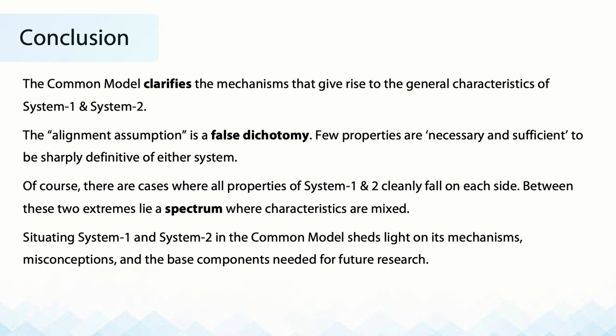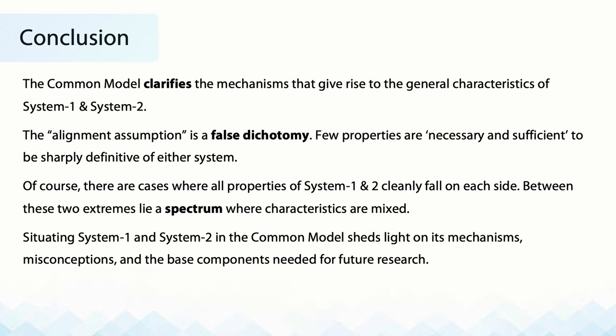In conclusion, the Common Model clarifies the mechanisms that give rise to the general characteristics of System 1 and System 2. The alignment assumption — that both systems have opposing characteristics — we conclude is a false dichotomy. Both systems have a mixture, a blending of properties, and few properties are necessary and sufficient to be sharply definitive of either system. While there are cases where all properties cleanly fall on either side, between these two extremities lies a spectrum where characteristics are mixed. By situating System 1 and 2 in the Common Model, this sheds light on the framework's mechanisms, its misconceptions, and the base components needed for future research.